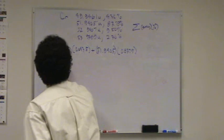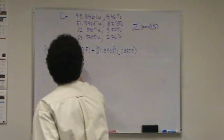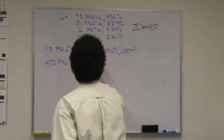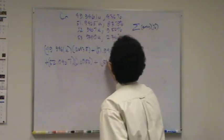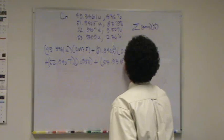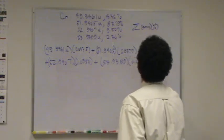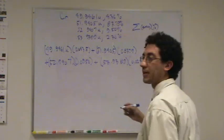Plus 52.9407 times 0.0950, plus 53.9389 times 0.0236. There we go.